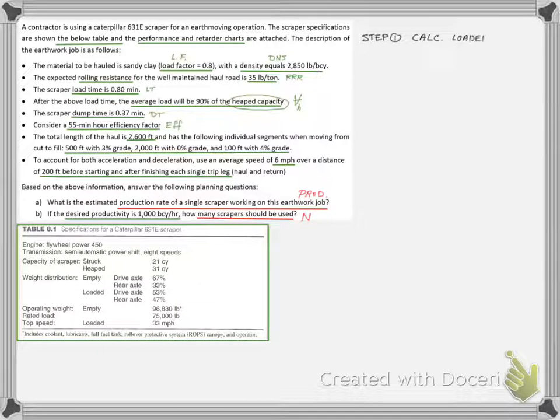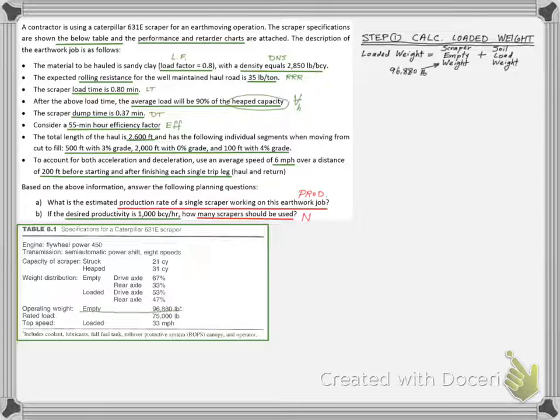Our first step is to calculate the scraper loaded weight, which includes the scraper's own weight and the soil load weight. From the scraper specifications, we see that its empty weight is 96,880 pounds.